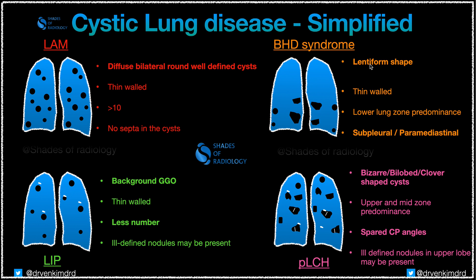Coming to Birt-Hogg-Dubé syndrome, the cysts are classic in that they are usually paramediastinal in location, or subpleural in location at the periphery. They are thin-walled and the shape is actually lentiform — not a classic round well-defined cystic appearance. Another important point is lower lung zone predominance. These classic features will give a hint to rule out Birt-Hogg-Dubé syndrome.